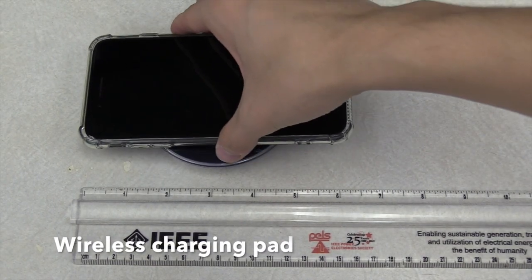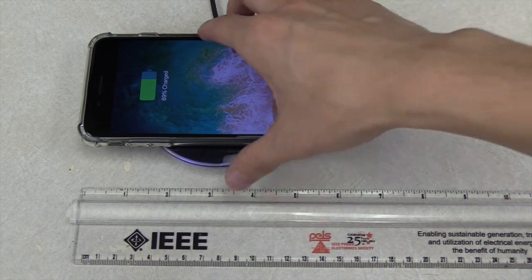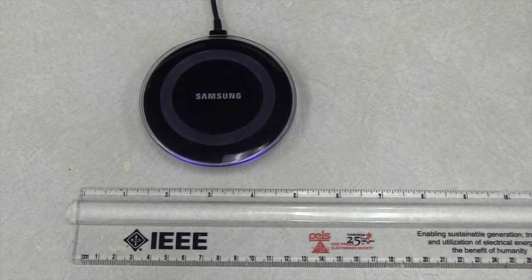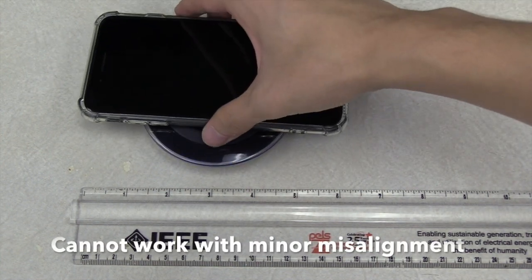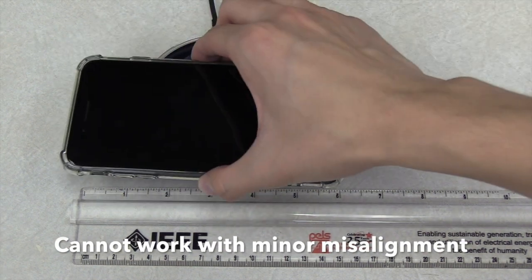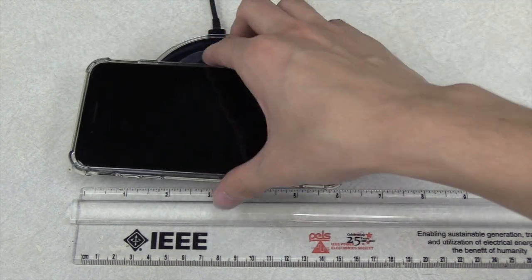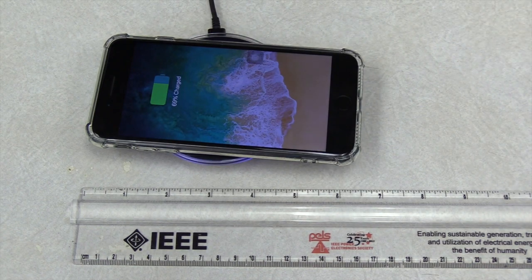This is a commercial wireless charging pad. When the smartphone is aligned very well with the pad, it works well, but it cannot work even with some minor misalignment between the charging pad and the smartphone, so it's not convenient to use.